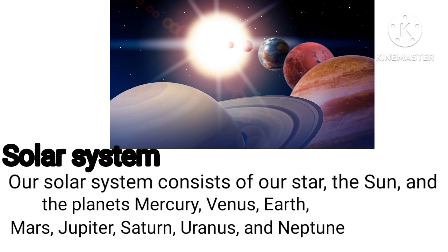Let's learn about the solar system explained for kids. Our solar system consists of our star, the sun, and the planets: Mercury, Venus, Earth, Mars, Jupiter, Saturn, Uranus, and Neptune.